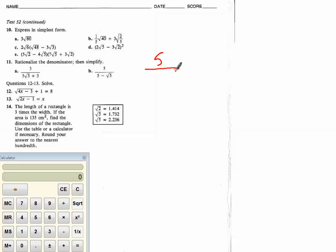We have 5 over 5 minus root 5. And again, we need to turn this into a difference of squares. So, what can I multiply this binomial by to make a difference of squares? Well, we're going to have a plus and it's going to be the same numbers. What I multiply the denominator by, I have to multiply the numerator by.